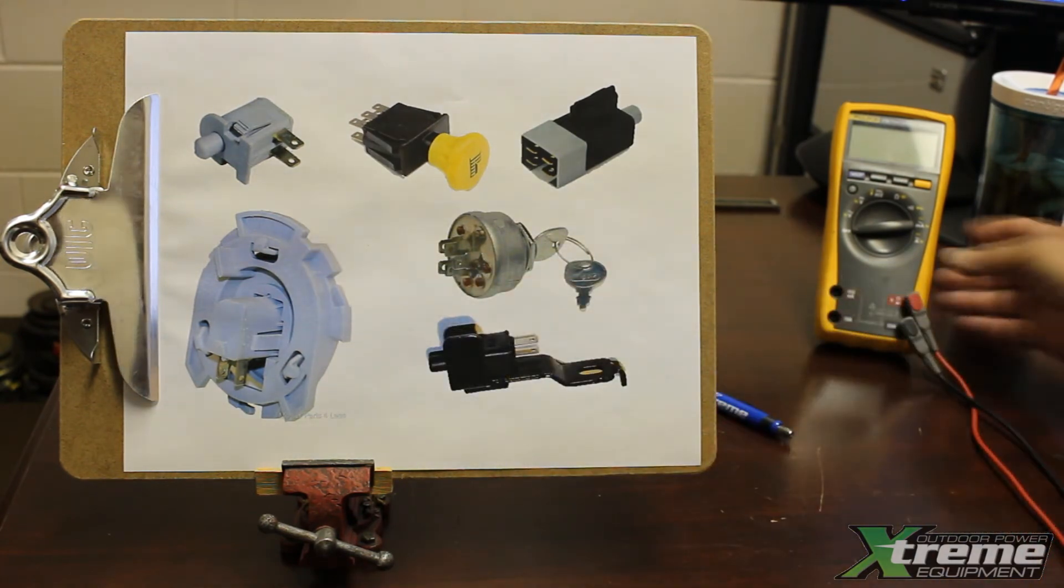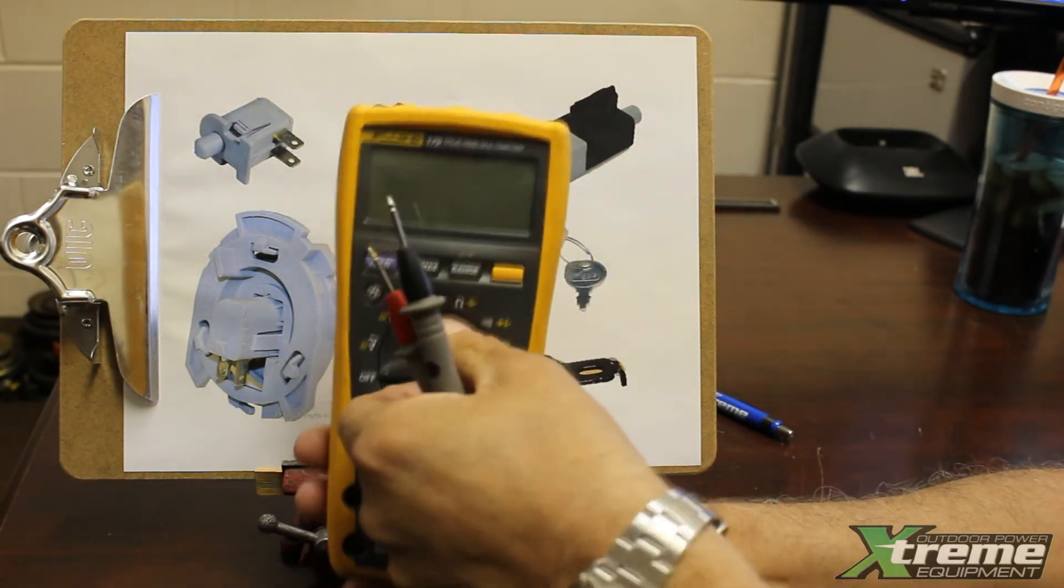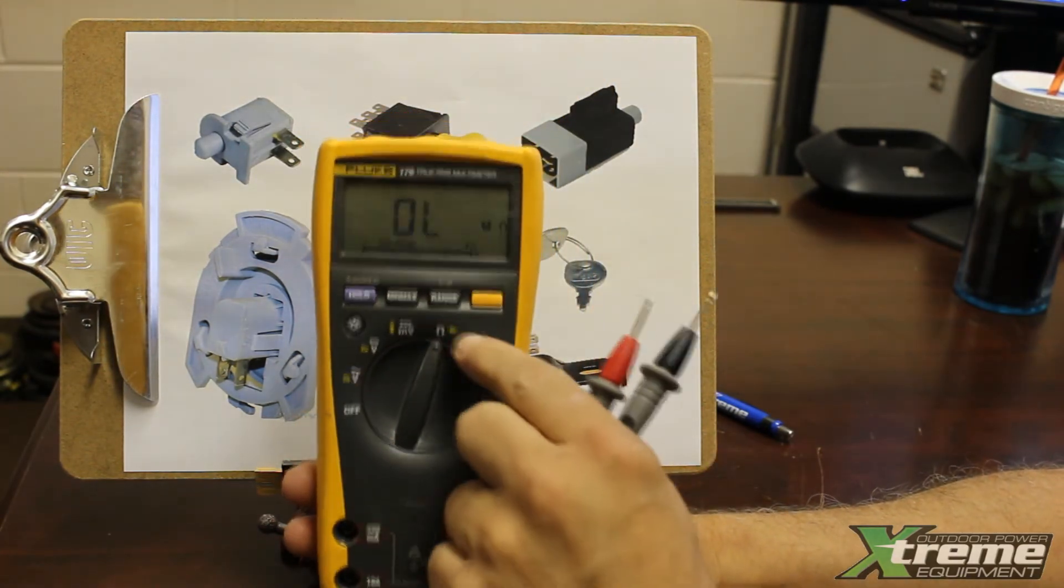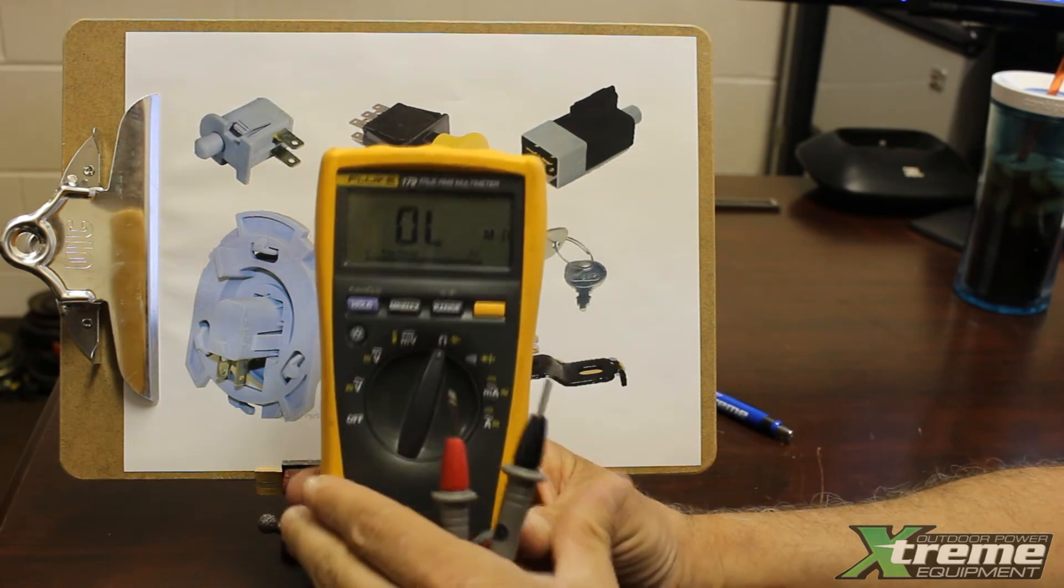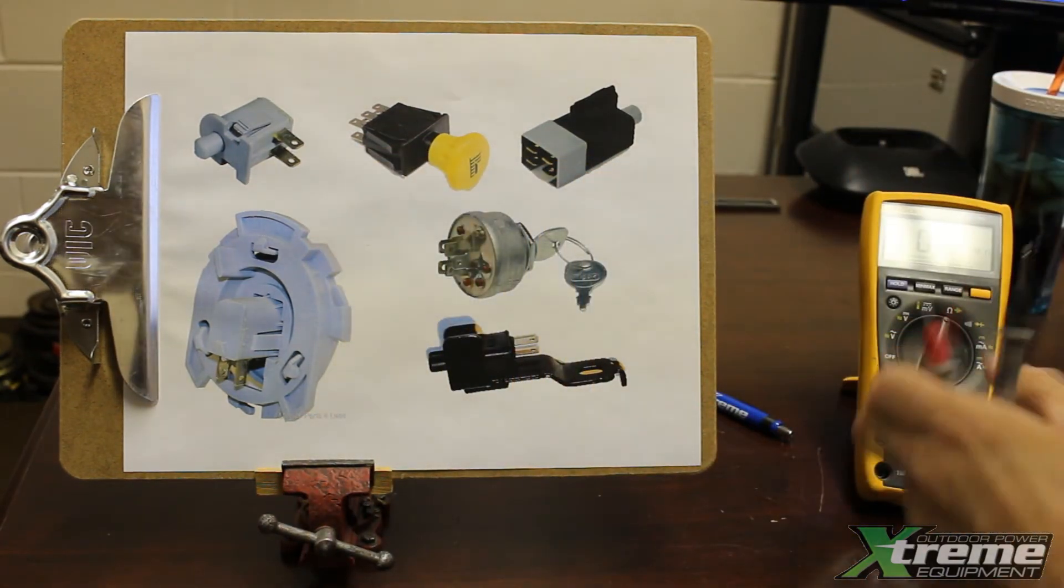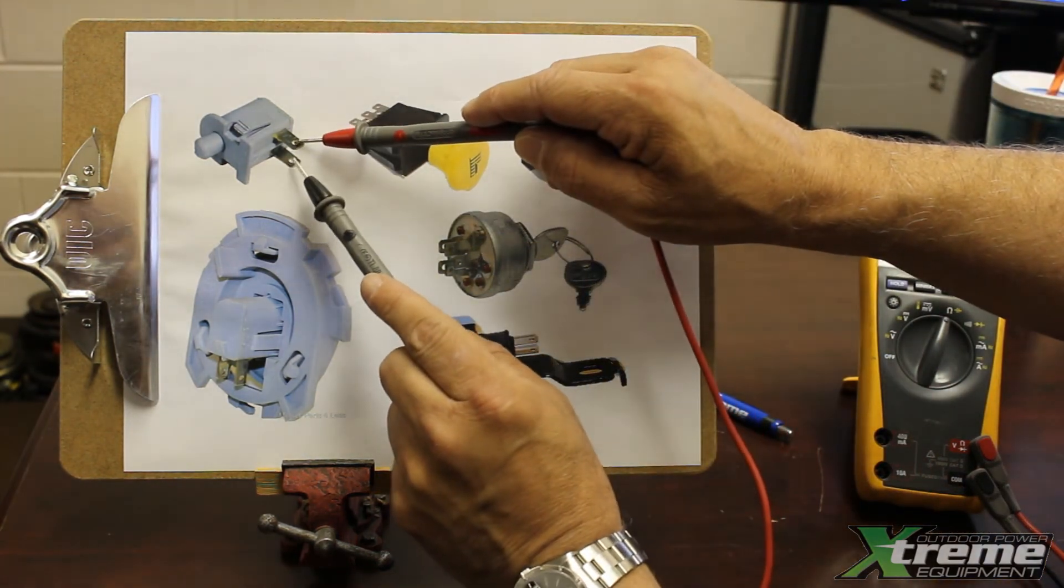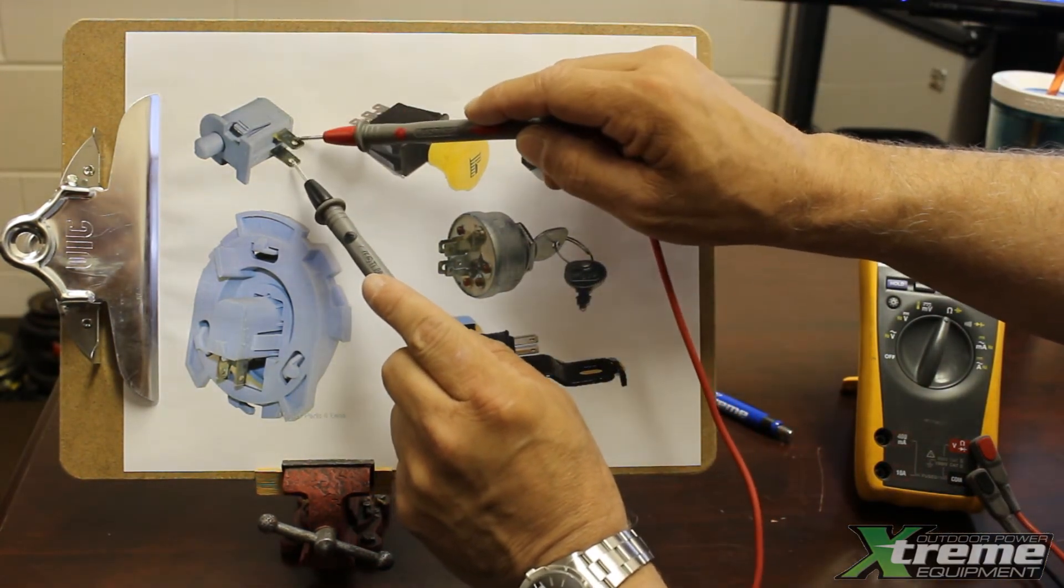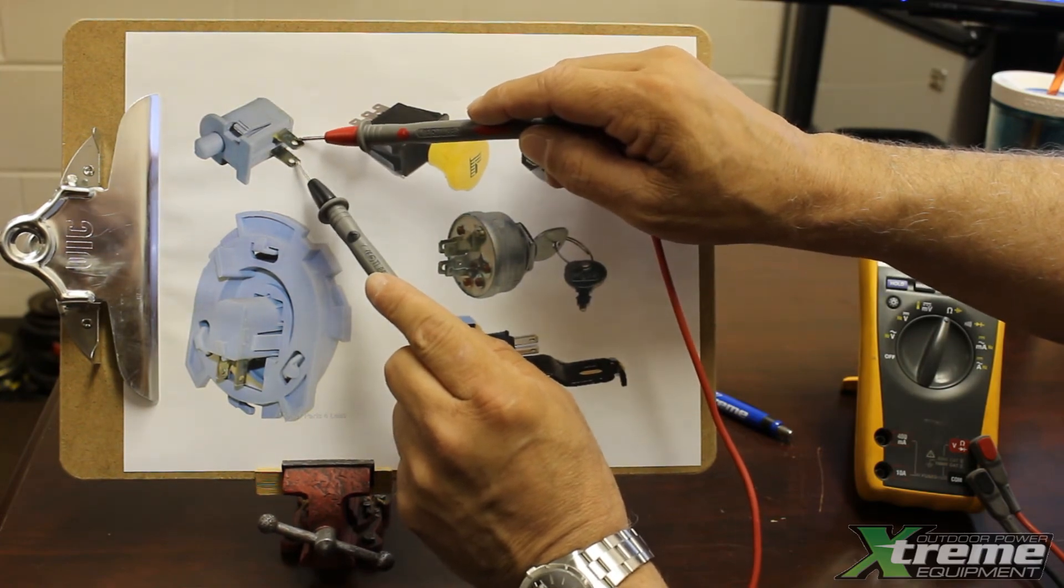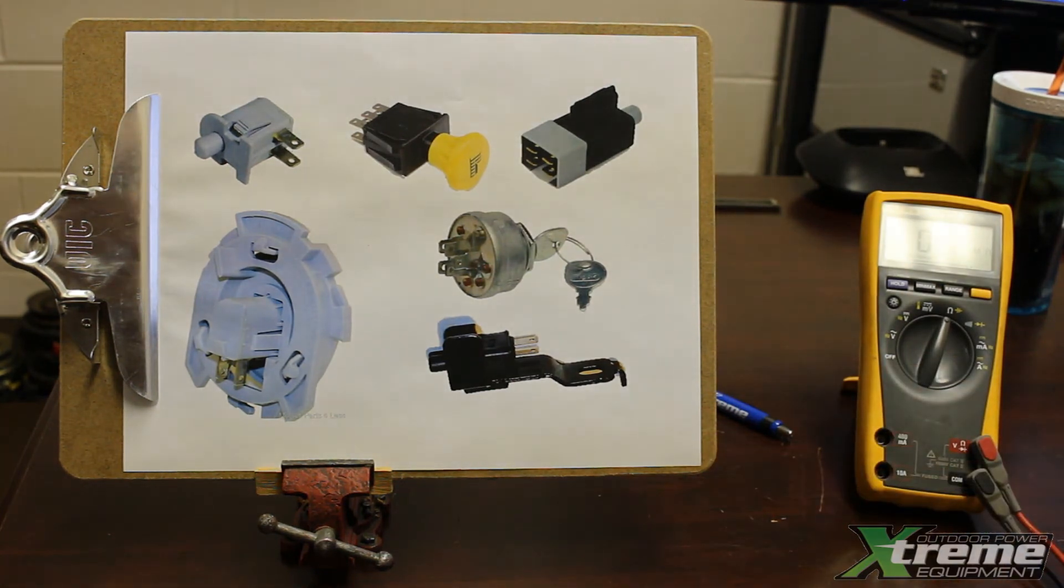So what we'll basically do to check those switches, we'll take our meter again and we're going to set that to resistance, ohms. Once we've done that, and we take as an example one that you could probably see real well, we'll unplug it, put our probes to both ends, and then manually actuate the switch to see whether the actual switch is good.